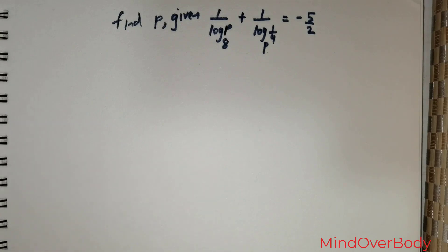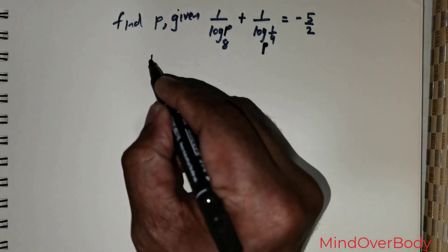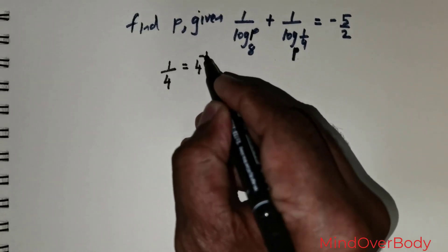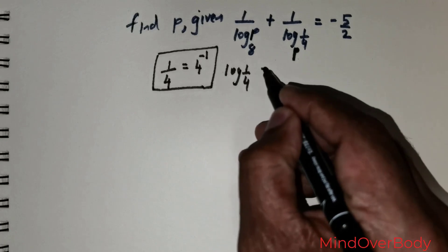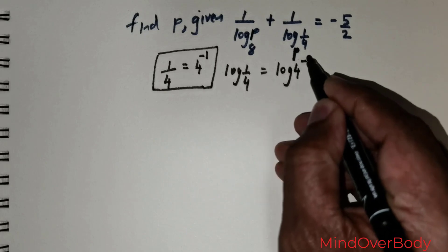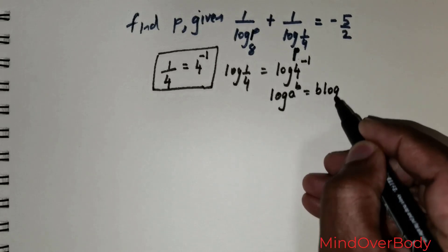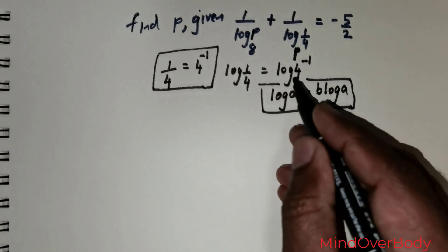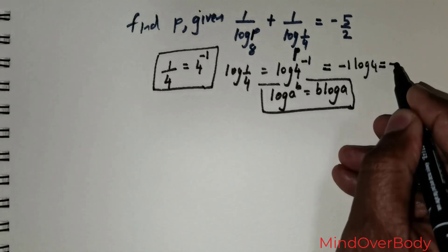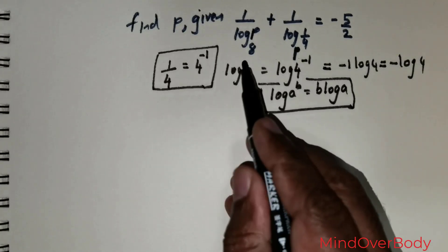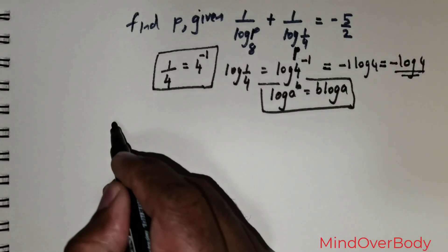First, what we need to do is get rid of this particular base. It is imperative to understand that 1 over 4 can be rewritten as 4 raised to the power negative 1. So I can rewrite log of 1 over 4 as log of 4 raised to the power negative 1. Using the logarithmic formula log(a^b) = b·log(a), this becomes negative 1 times log 4, which equals negative log 4.